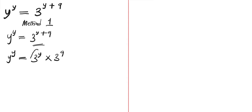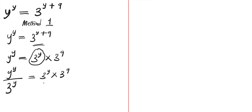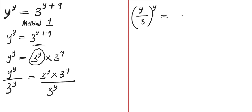Let's divide both sides of the equation by 3 to the power of y. So we are going to have y to the power of y divided by 3 to the power of y equals to 3 to the power of y times 3 to the power of 9 divided by 3 to the power of y. All 3 to the power of y cancels, leaving 3 to the power of 9.